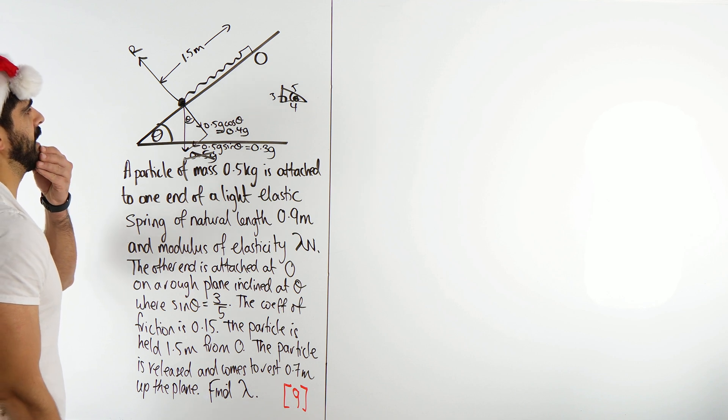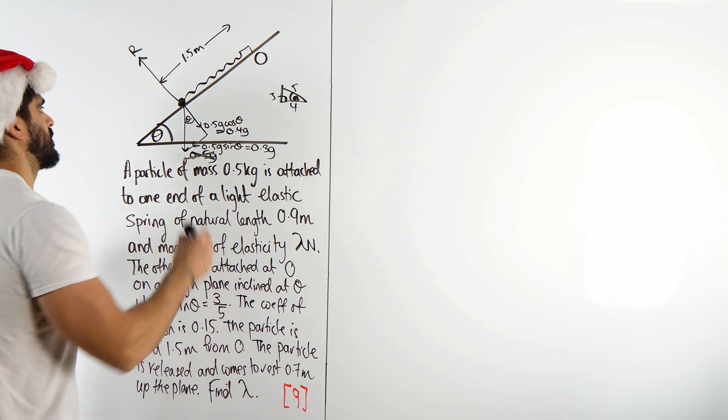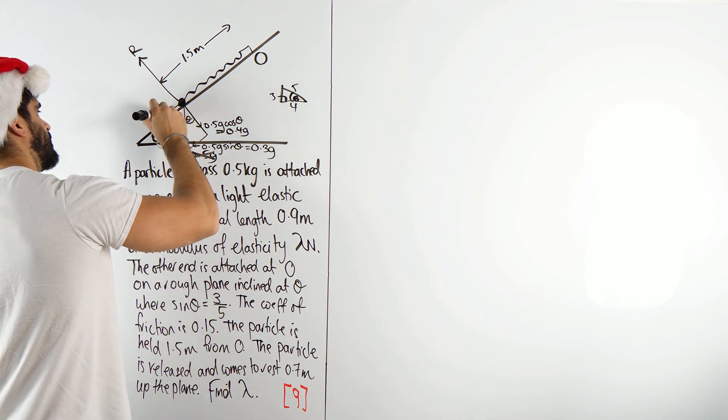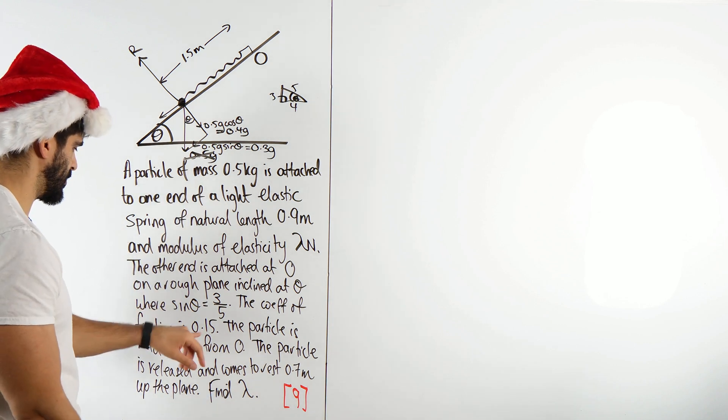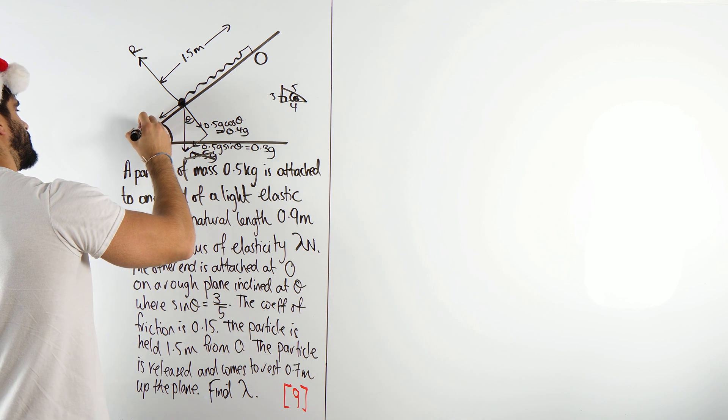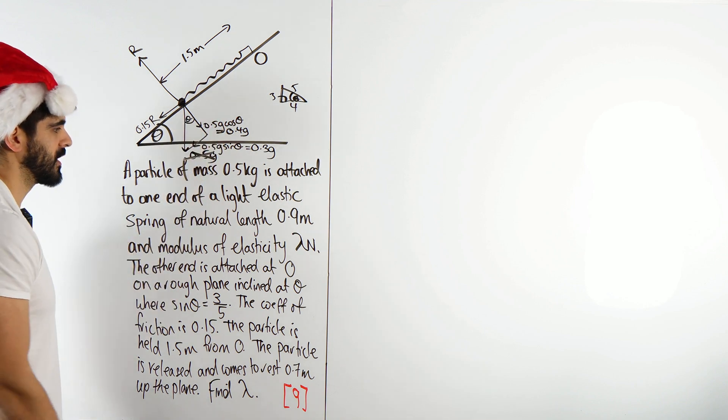What's the next thing I would label? We're going to be projecting it up, so I'm just going to label the friction. The friction will be mu R, mu being 0.15 times R. Which we actually know what R is, it's 0.4g.